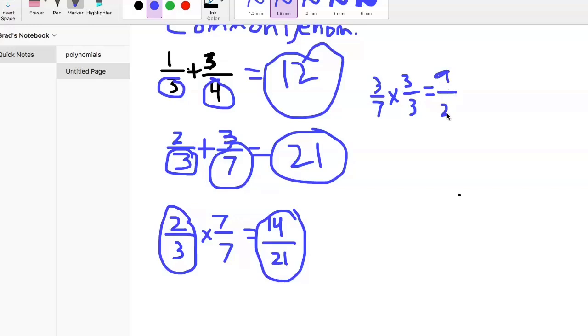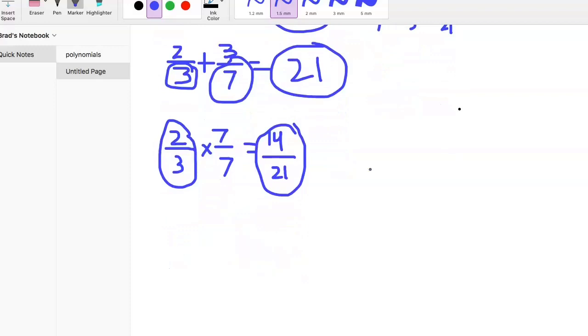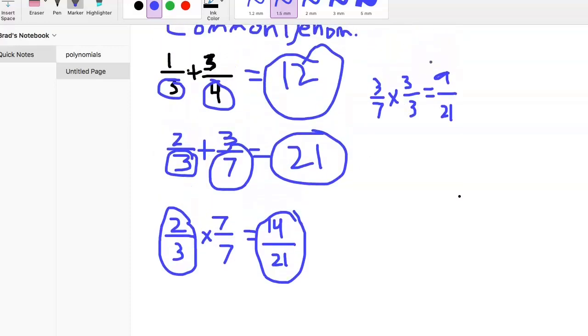Now we can actually add these together. We have 9/21 here, 14/21 here. 14 plus 9 is 23, and the bottom number stays the same. So this would actually be the answer, 23/21.